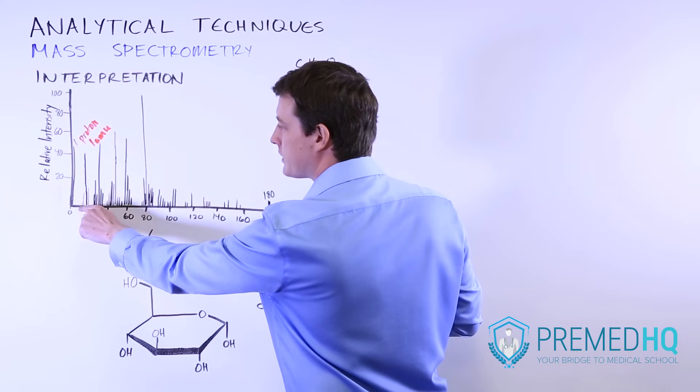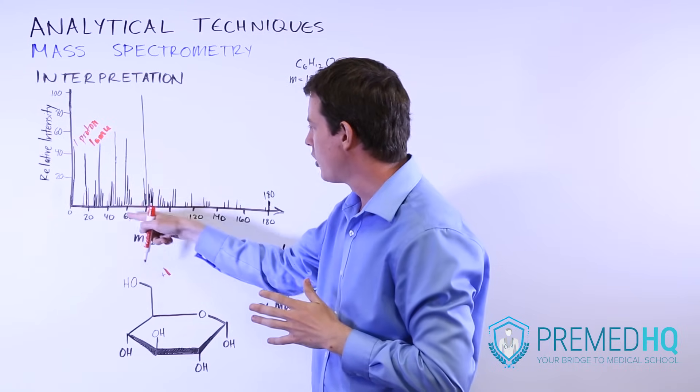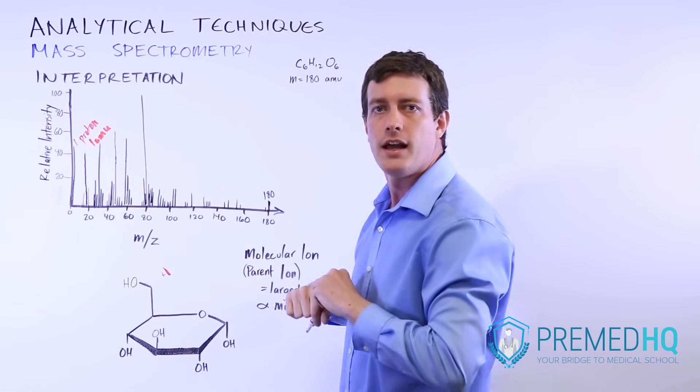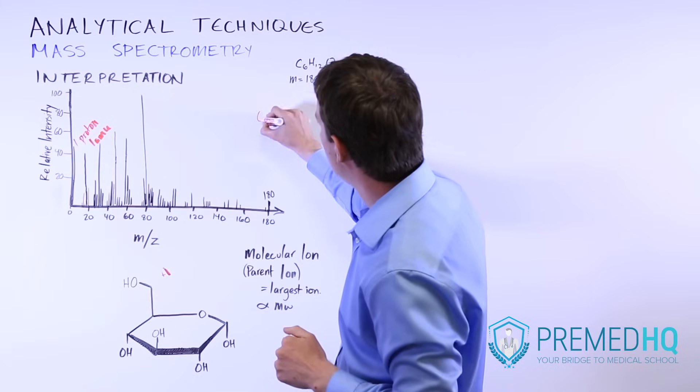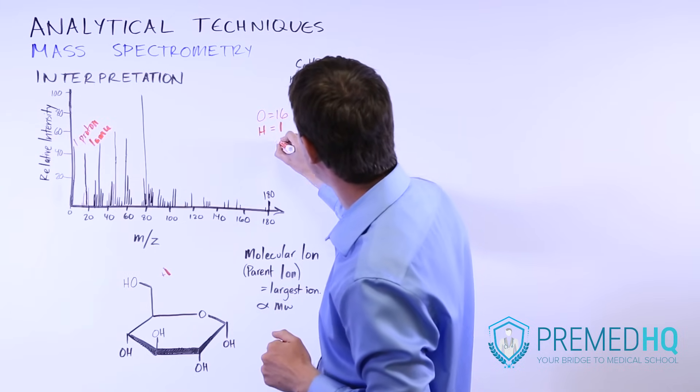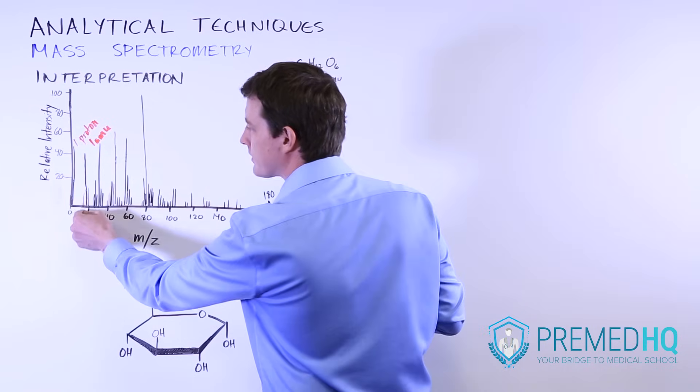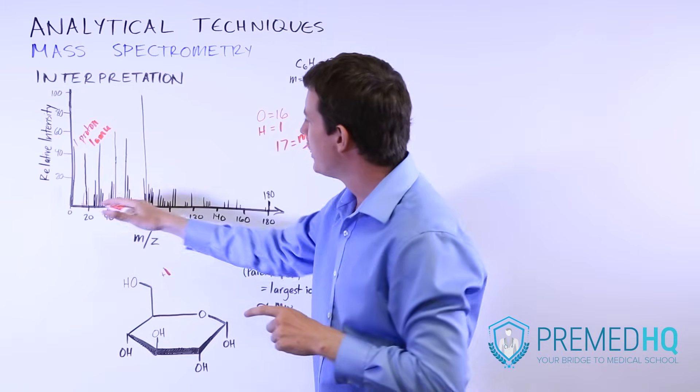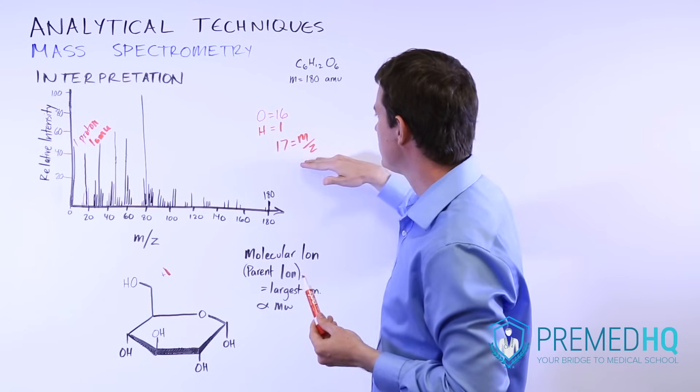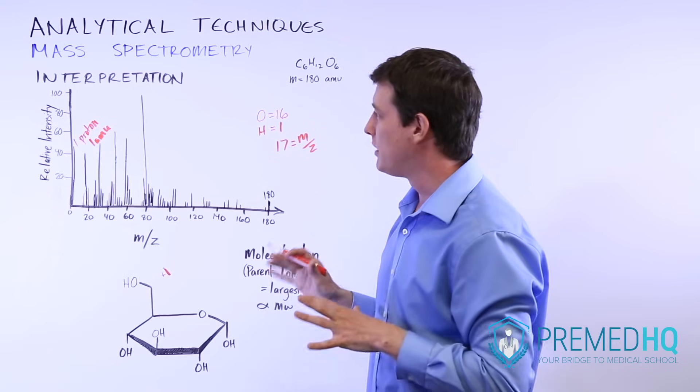As we move along, we'll see peaks at various other points. We can look at the ratio of how high the mass to charge is versus that first one in order to figure out what the amu of that component is. For example, if we have an OH group, remember that oxygen has a mass of 16 and hydrogen has a mass of one, so that will be at a mass to charge of 17. If you see events corresponding with a mass to charge ratio of 17, that tells you there's very likely an OH group there.